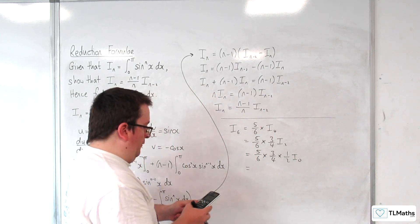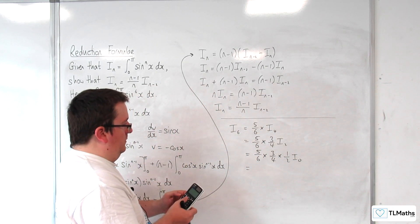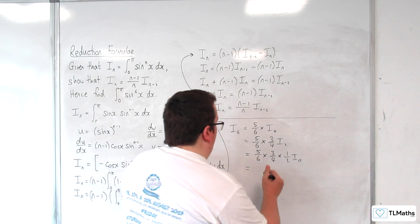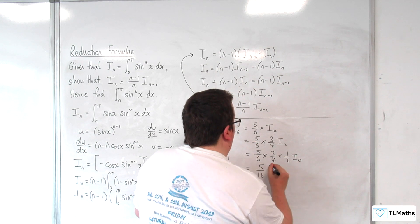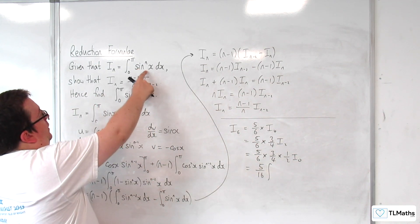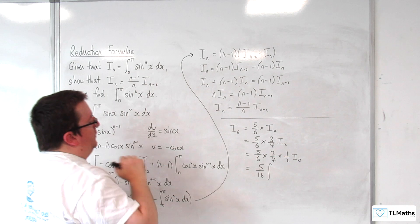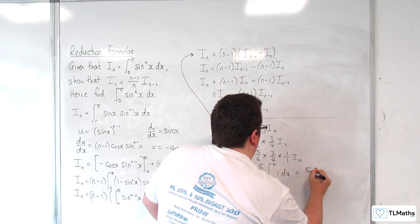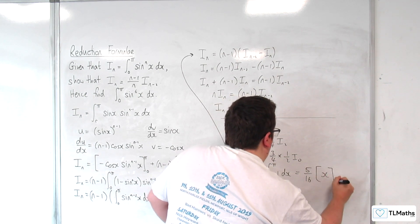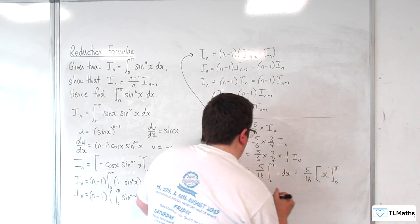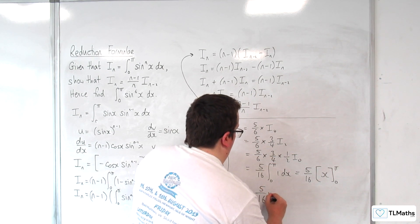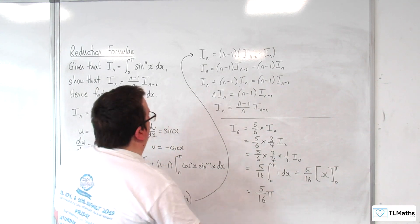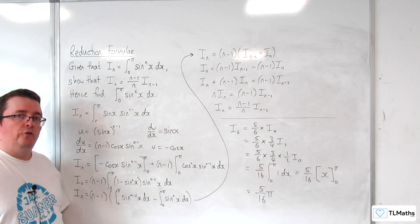So I've got 5/6 times 3/4 times 1/2, which is 5/16 of I_0. And now sin^0(x) is just 1. So the integral from 0 to π of 1 dx, which is 5/16 of x evaluated between 0 and π, which is just 5π/16. And so that is the value of that integral using the reduction formula.